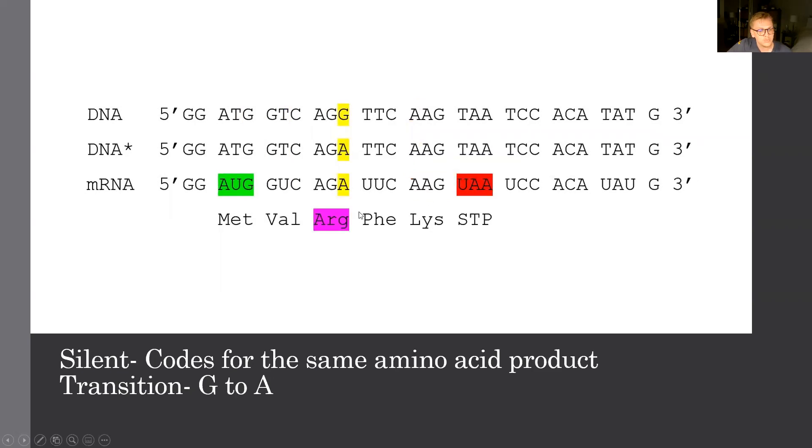The next type of point mutation is going to be dealing with a silent mutation. And this codes for the same amino acid product. This is really interesting. So we have a transition that occurs from a G to an A. But because the codon for arginine can be done in a multitude of ways, we'll see that it codes for the same amino acid. So the product is the same, but the DNA sequence is different.